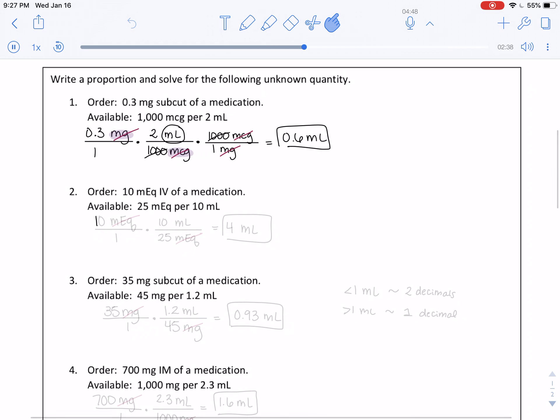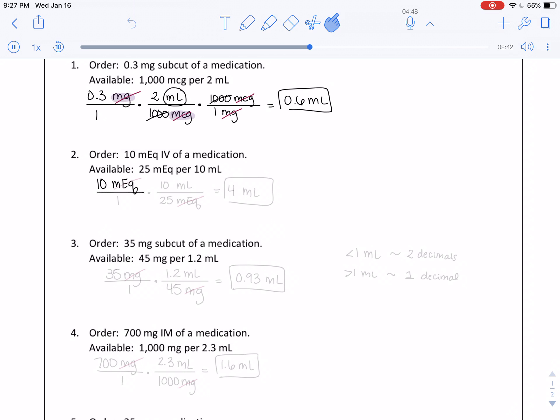Number two: 10 of medication and we have 10 milliliters for every 25 MEQs. This one's a straightforward conversion because we just cancel those. Our answer is already in milliliters and we get 4 milliliters. Number three: 35 milligrams, and we have 1.2 milliliters for every 45 milligrams. Cancel those guys, and this gives us 0.93 milliliters. Remember our rounding rules: anything less than 1, we keep 2 decimal places. Anything more than 1 milliliter, we keep 1 decimal.